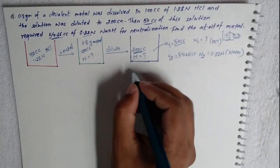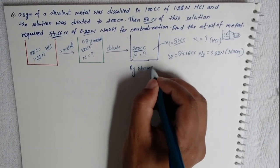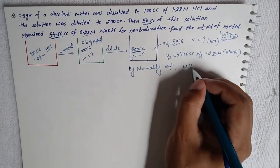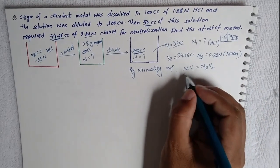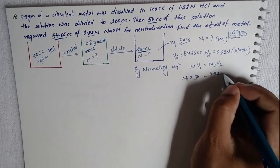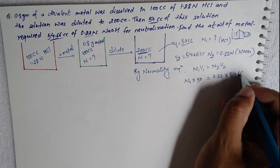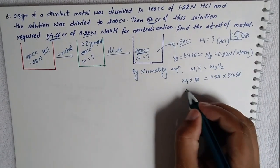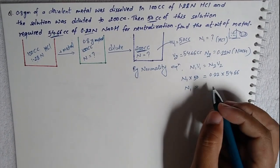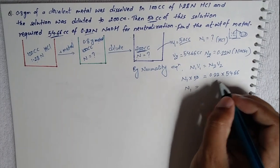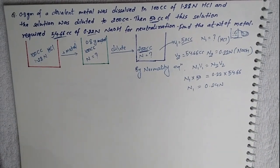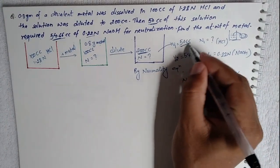By the normality equation, N1 × 50 = 0.22 × 54.66. Calculating this, N1 = 0.24 normality. So the normality of the 50 cc sample of HCl is 0.24 N.